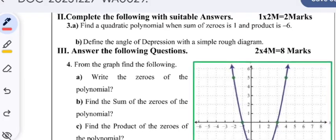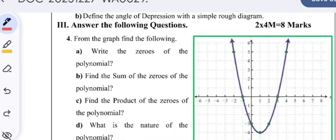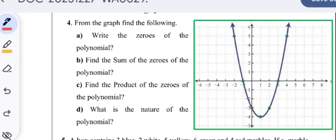Find a quadratic polynomial when sum of zeros is 1 and product of zeros is -6. Define the angle of depression with a simple rough diagram. Answer the following questions from the graph.